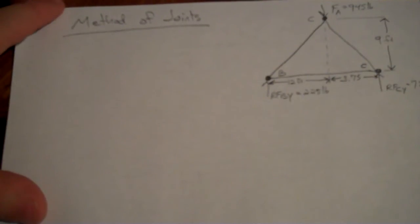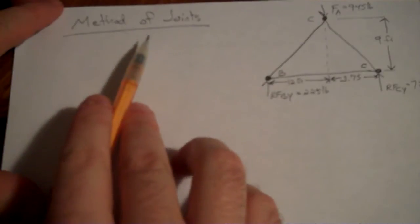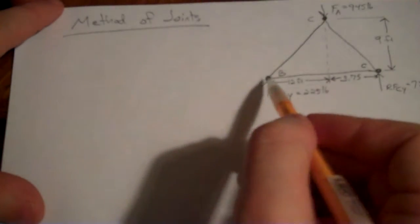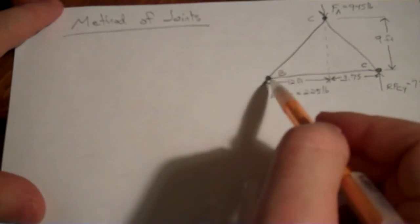All right, so now let's calculate the actual member forces in this truss. We're going to use the method of joints, which means we're going to look at each joint individually and sum the forces on that joint.